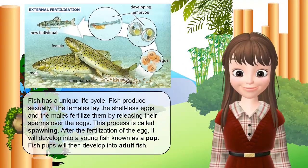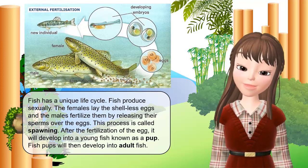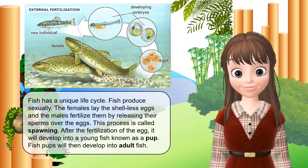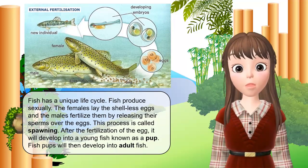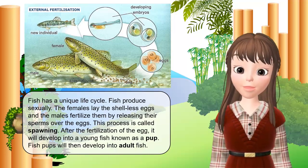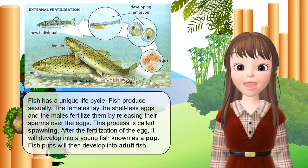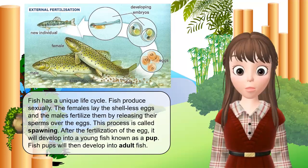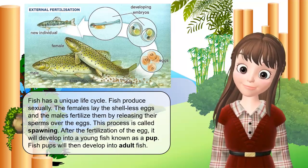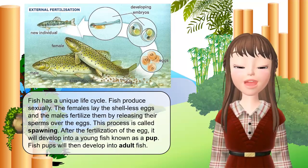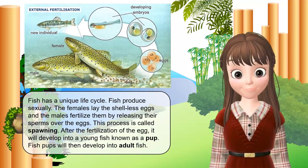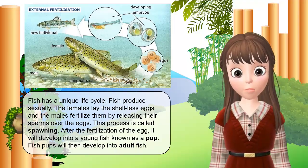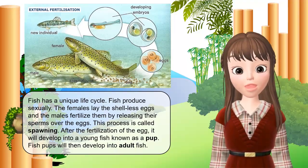Fish has a unique life cycle. Fish reproduce sexually. The females lay shell-less eggs and the males fertilize them by releasing their sperm over the eggs. This process is called spawning. After the fertilization of the egg, it will develop into a young fish known as a pup. Fish pups will then develop into adult fish.